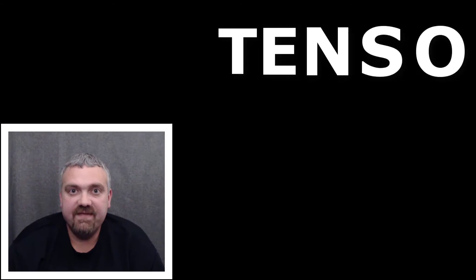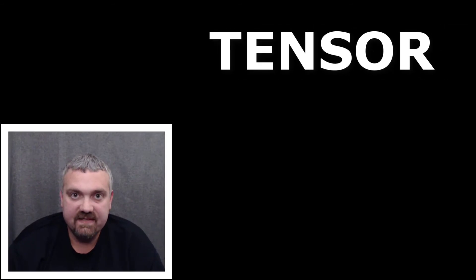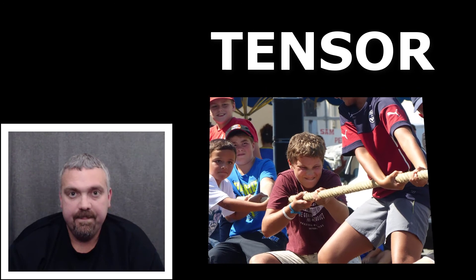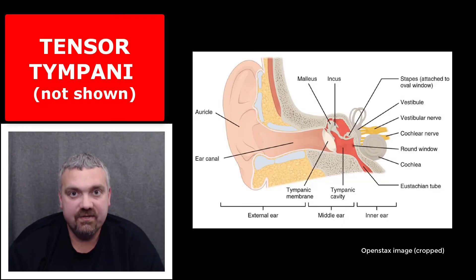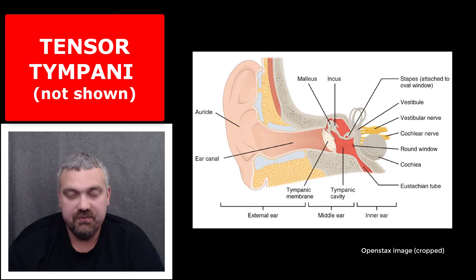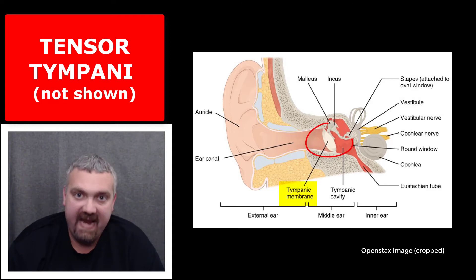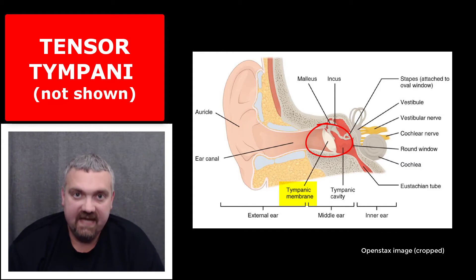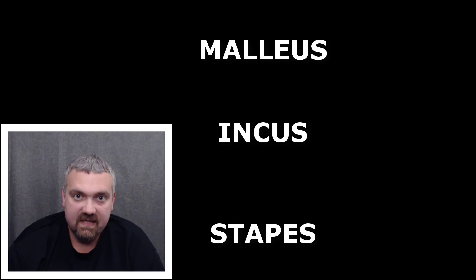Lastly, we have the tensors. Like the name implies, they generate tension, they create tension. The best example I can think of here is the tensor tympani muscle. Tympani should make you think of the tympanic membrane, which is your eardrum. This is a small muscle that increases the tension on the malleus.